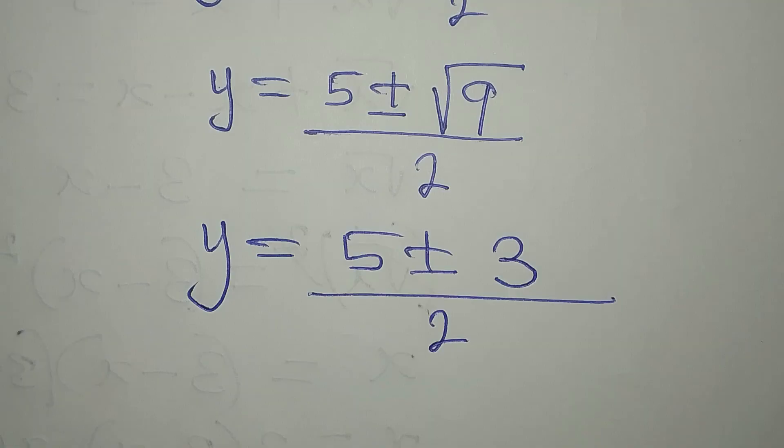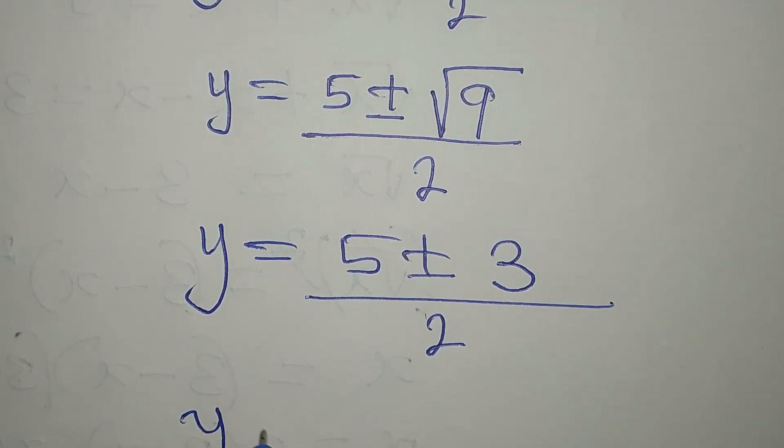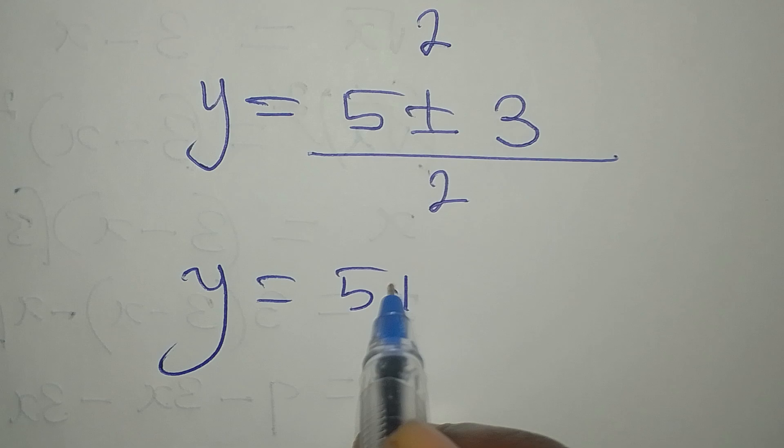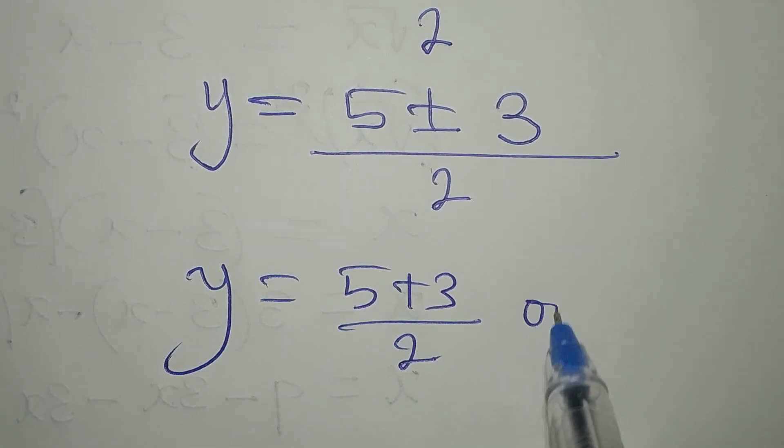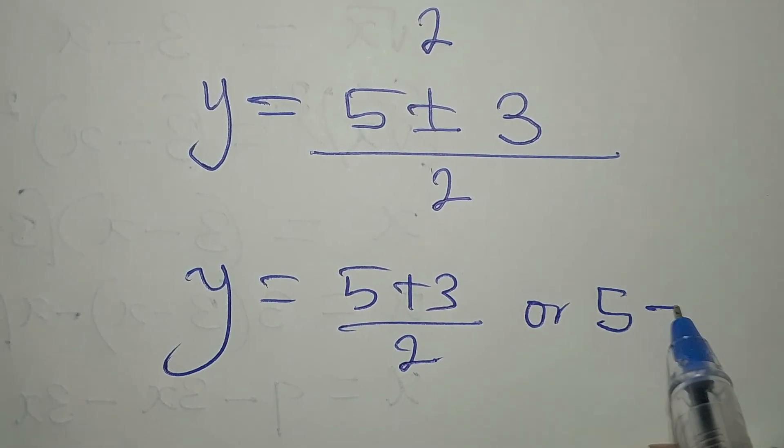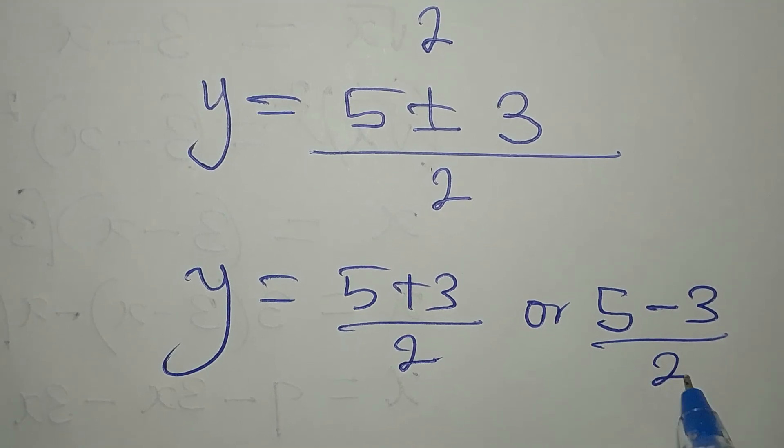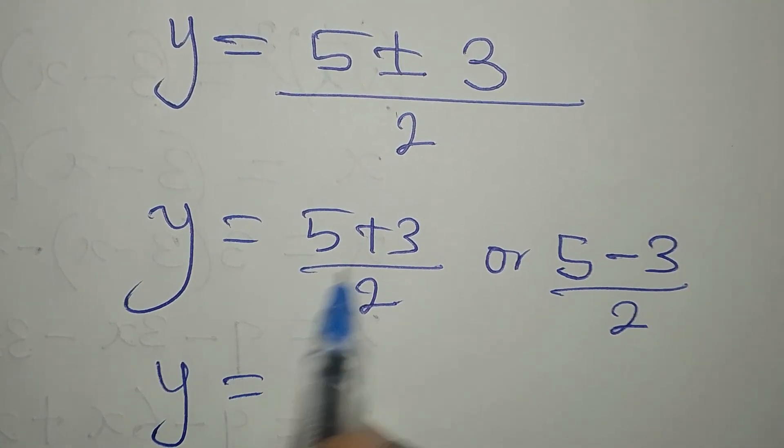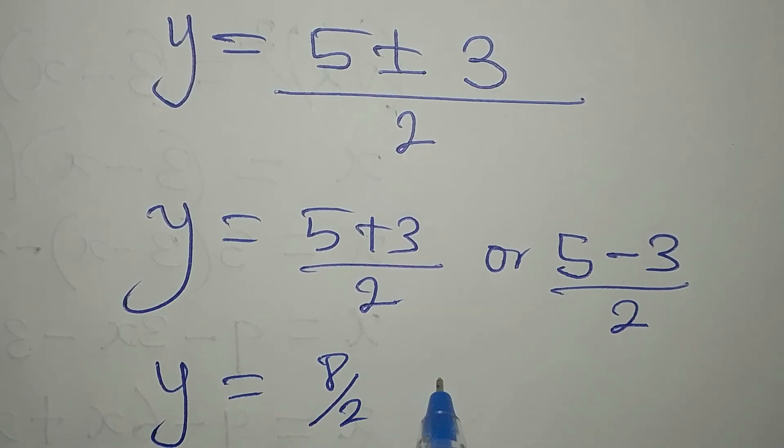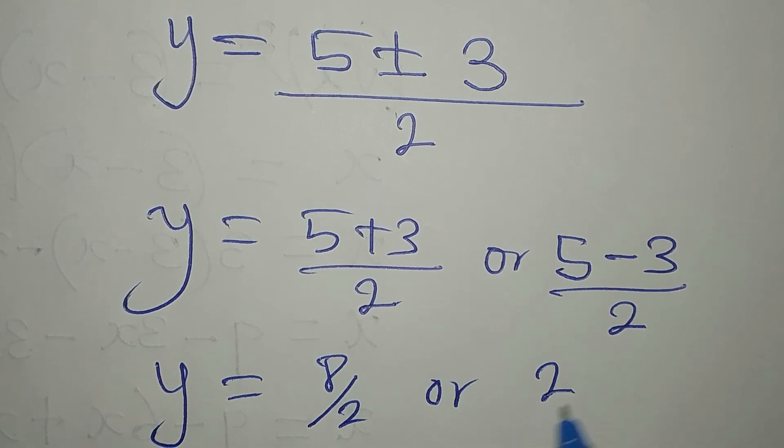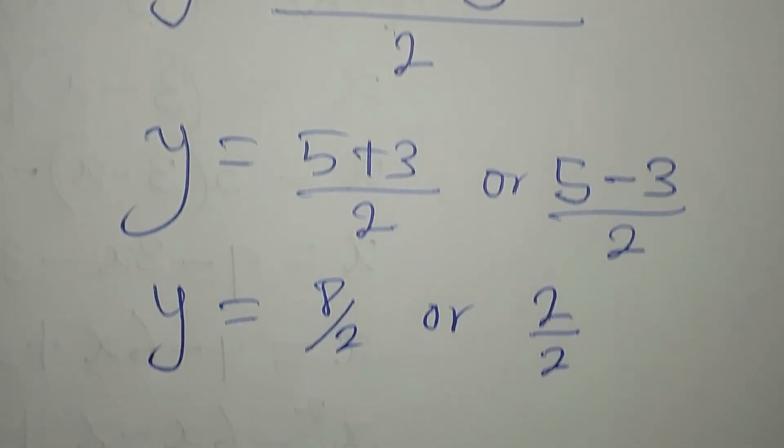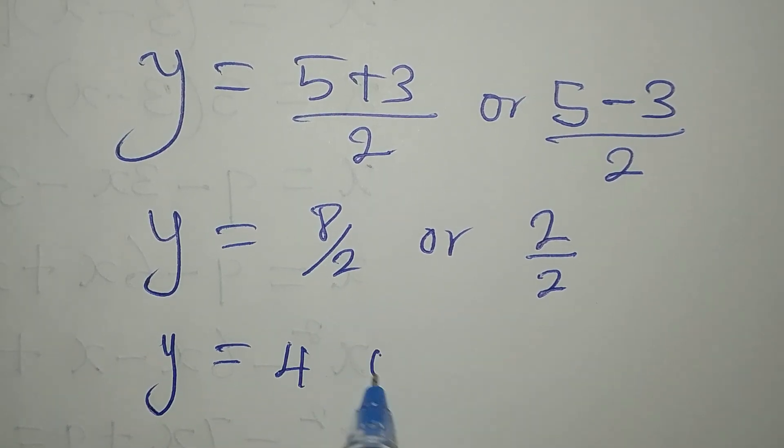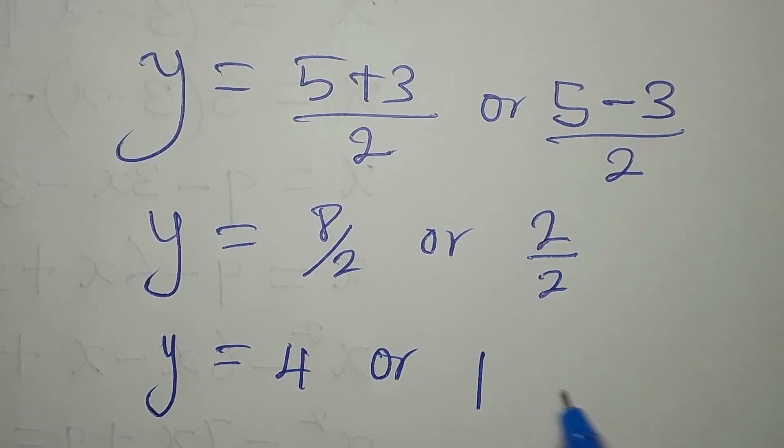Now, our Y is 5 plus or minus square root of 9 is 3, and we divide by 2. So, to go ahead with this, our Y will now be 5 plus 3 over 2 or 5 minus 3 over 2. Y is 5 plus 3 is 8 over 2 or 2 over 2. Our Y will be 8 divided by 2 is 4 or 2 divided by 2 is 1.